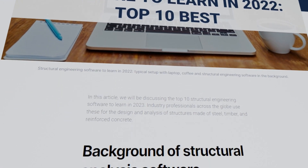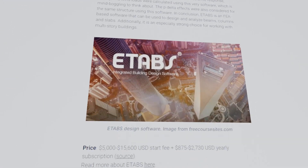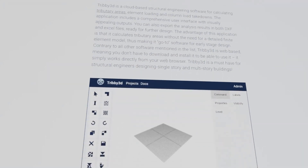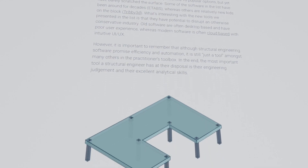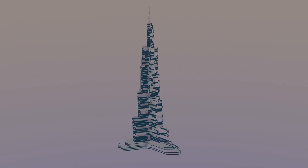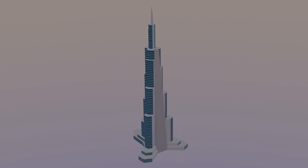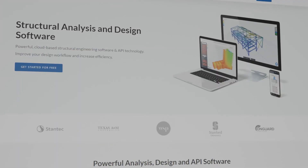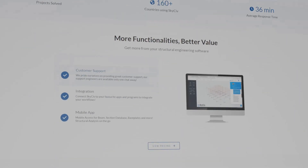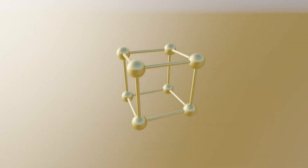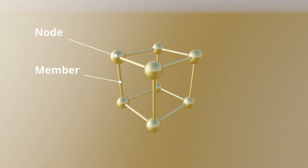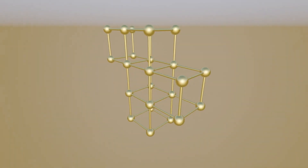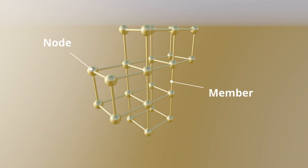We can model the Minecraft scaffolding in a 3D structural analysis program to see how it would perform in the real world. There are countless structural analysis programs used in the industry, with some being free and others costing tens of thousands of dollars for a subscription. These costs are justified given that these powerful programs are essential for designing some of the world's tallest buildings. I will be using SkySiv, which is a powerful browser-based platform with a free version. A structural model consists of nodes, which are points in 3D space, and members, which are straight lines which connect the nodes. These nodes and members are the building blocks that allow us to form a model of any shape.